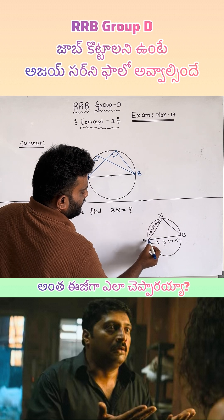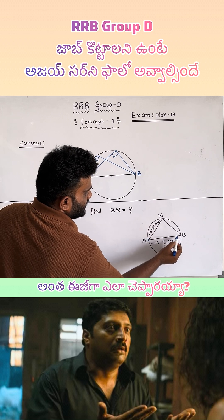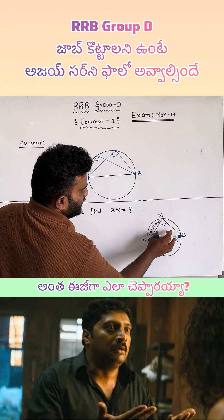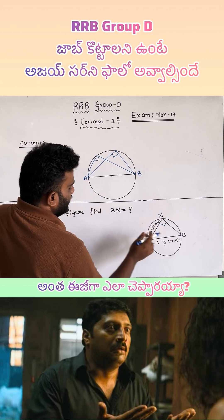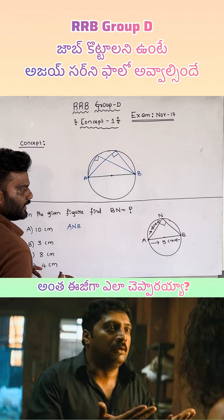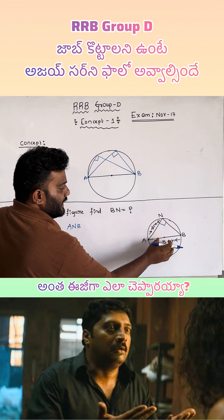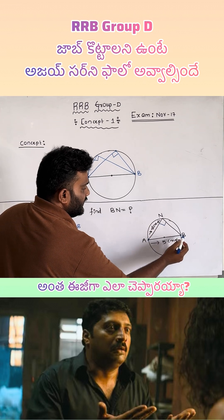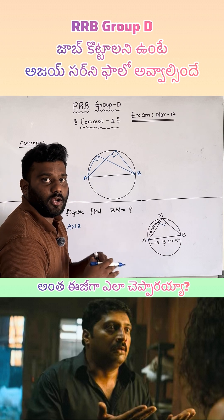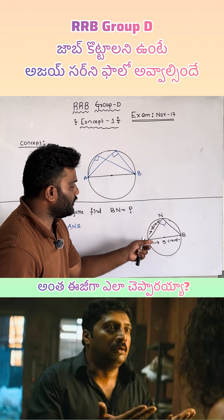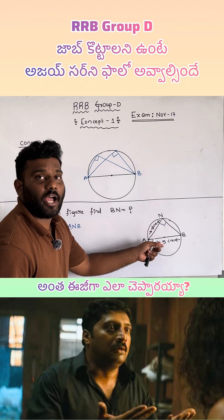AB is the diameter of the center, so this angle is 90 degrees. Triangle ANB is a right angle triangle. You can apply the Pythagoras theorem. AB, the diameter, is the longest side — the longest chord — so AB is the hypotenuse.